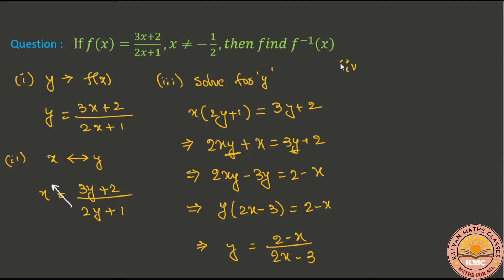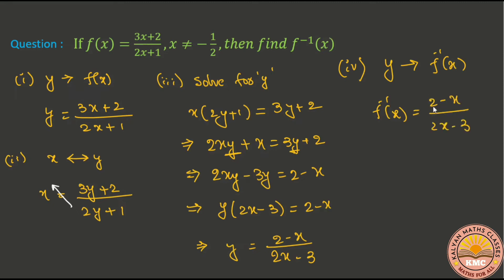So the final step: y is replaced by f inverse of x. This is the question of f inverse of x. So f inverse of x equals (2 minus x) / (2x minus 3). This is our answer.